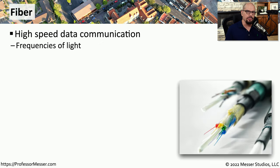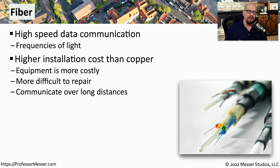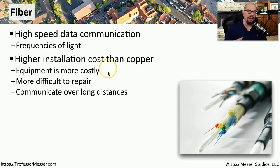One of the higher speed terrestrial types of internet connection is fiber. These fiber optic links are great for internet connections because you can send a very large amount of information in a very short period of time. Fiber optics tends to be more expensive because the equipment costs a bit more, and you would have more expensive repairs for the fiber optics themselves and the equipment, but it does allow you to communicate over very long distances.